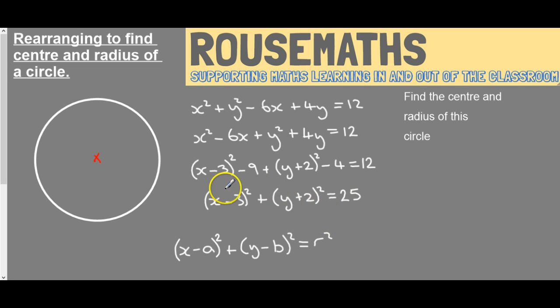So the circle is now in the right form. If r² equals 25, then r must be 5.